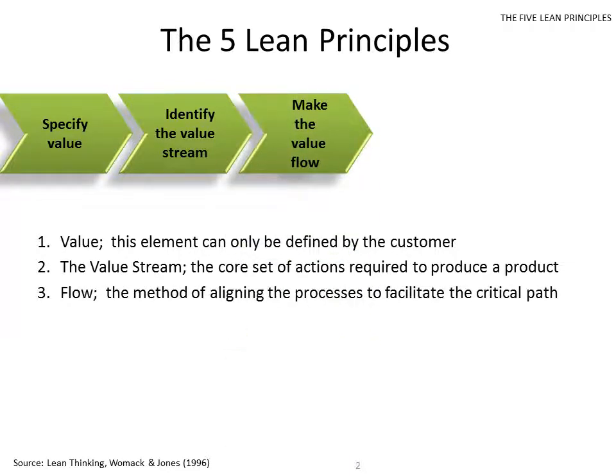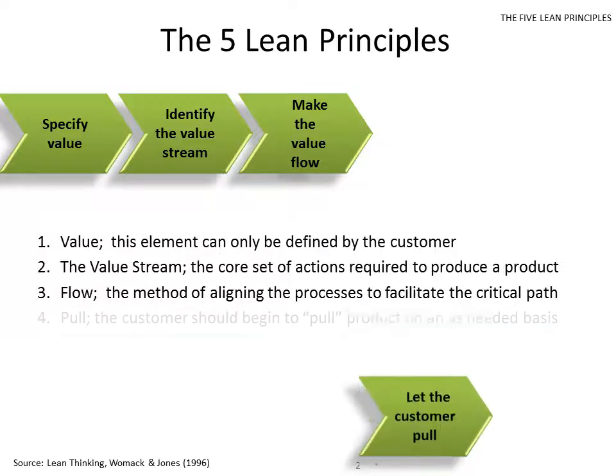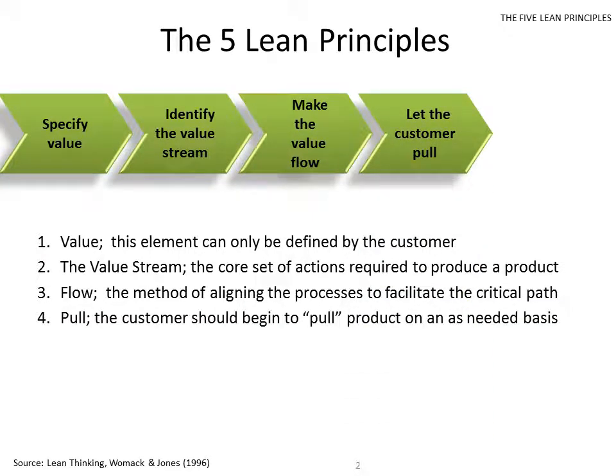The third lean principle is flow. This is the method of aligning all those individual steps to facilitate the critical path between them. After we make value flow — so all those steps in the value stream are delivered one after the other without disturbance — we then let the customer pull, which means we only produce at the drum beat of need when the customer demands.